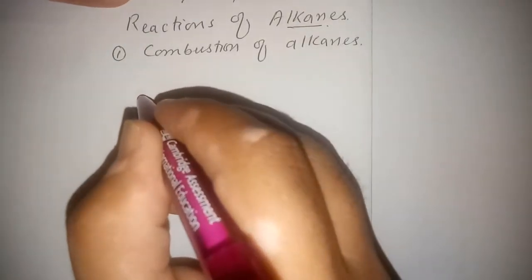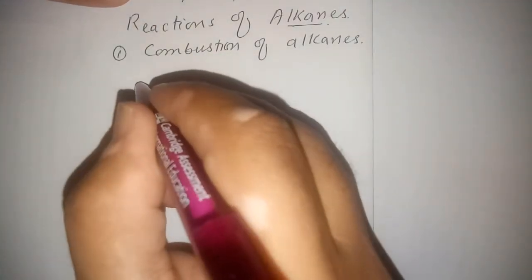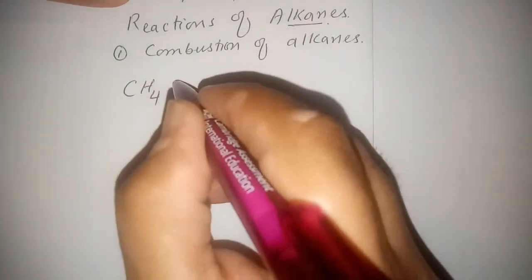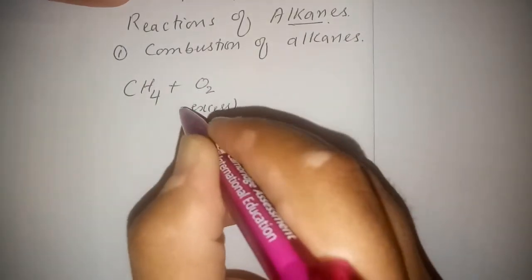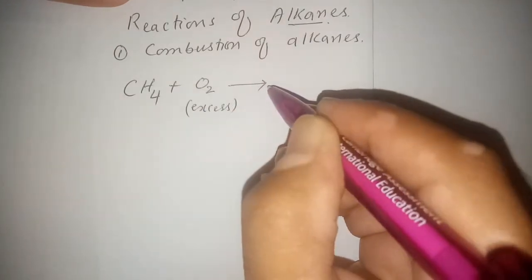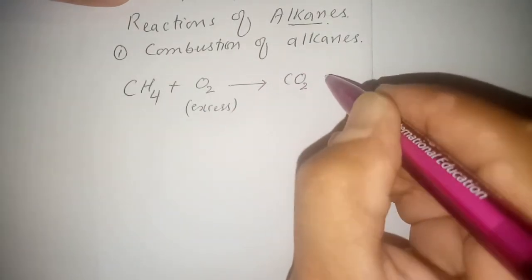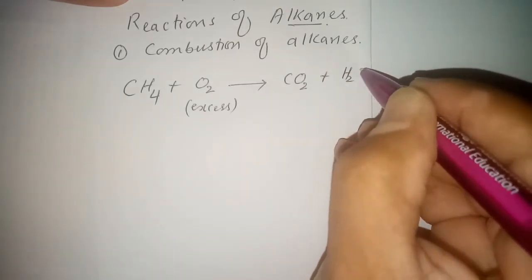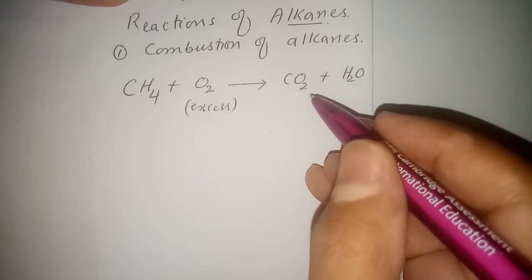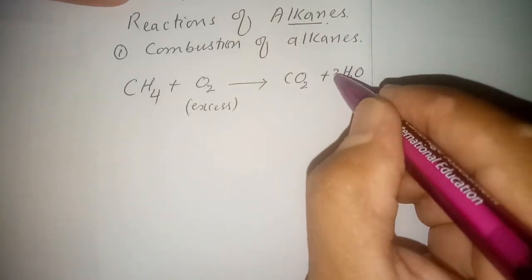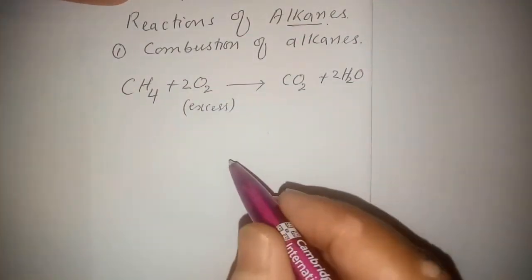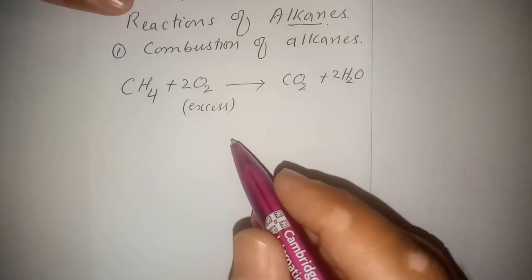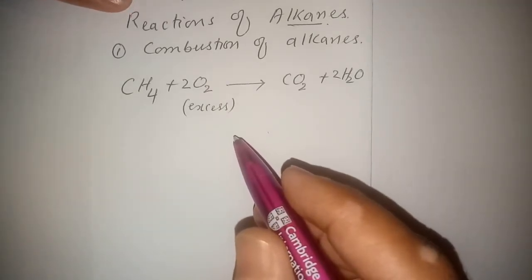All hydrocarbons easily combust in the presence of an excess supply of oxygen. Taking methane, the simplest alkane, when it combusts in excess oxygen it produces carbon dioxide and steam or water. To balance this equation we multiply water by two and place two with oxygen as well.